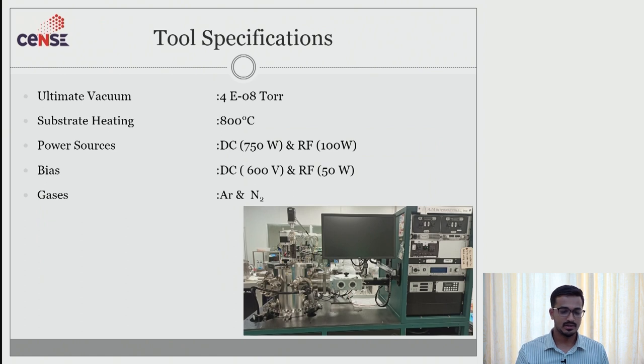Moving on to tool specifications. Ultimate vacuum that this tool can achieve is 4E minus 8 and the substrate heating capability is up to 800 degree Celsius. Here also we use the power source DC and RF and we can also bias with DC and RF. The gases here we are going to use are argon and nitrogen.